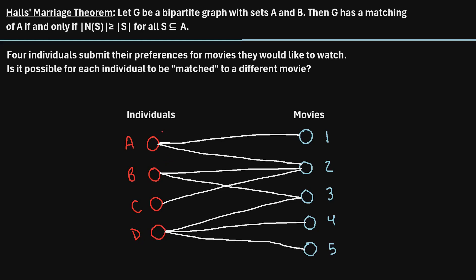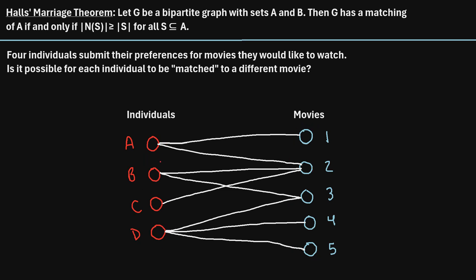What Hall's Marriage Theorem says is that this scenario is really a graph — more specifically, a bipartite graph — meaning there are two sets of vertices in which each edge of the graph has one endpoint in one vertex set and the other endpoint in the other vertex set. Hall's Marriage Theorem says that a matching must exist if, for every subset S of set A, the cardinality of the neighborhood of S is greater than or equal to the cardinality of S.